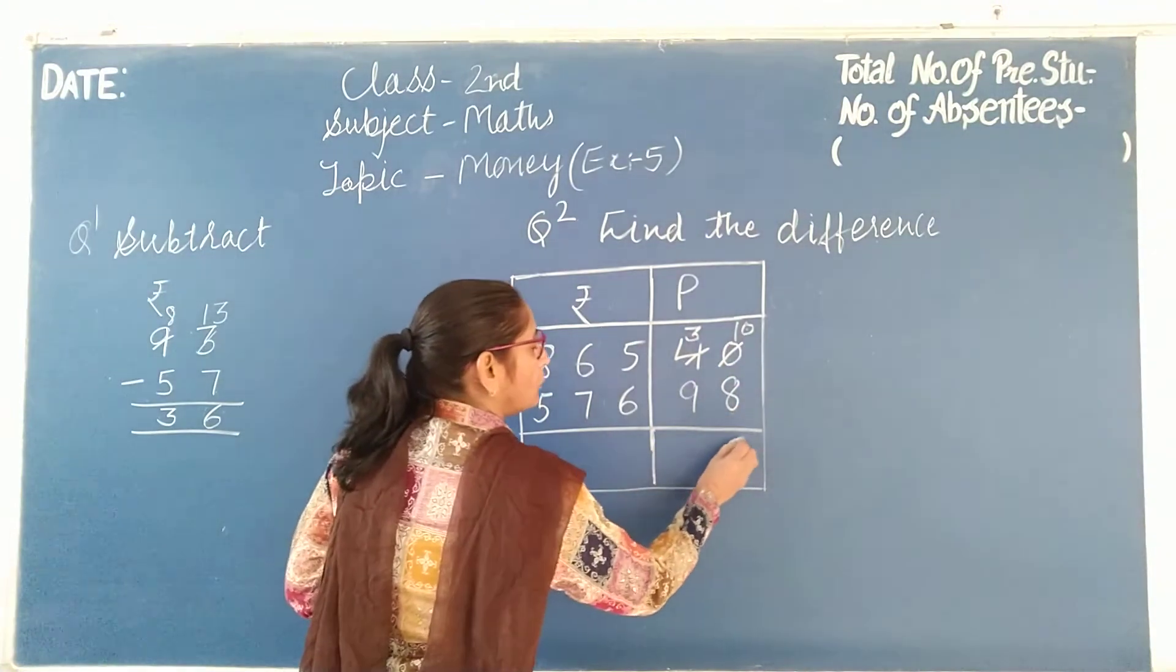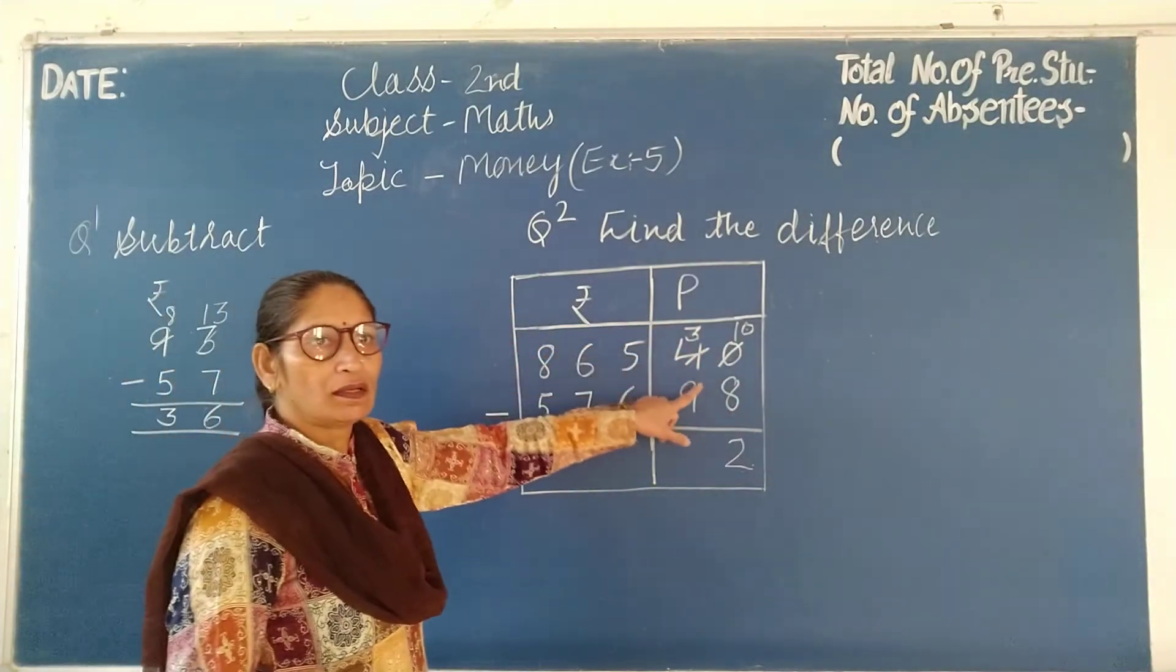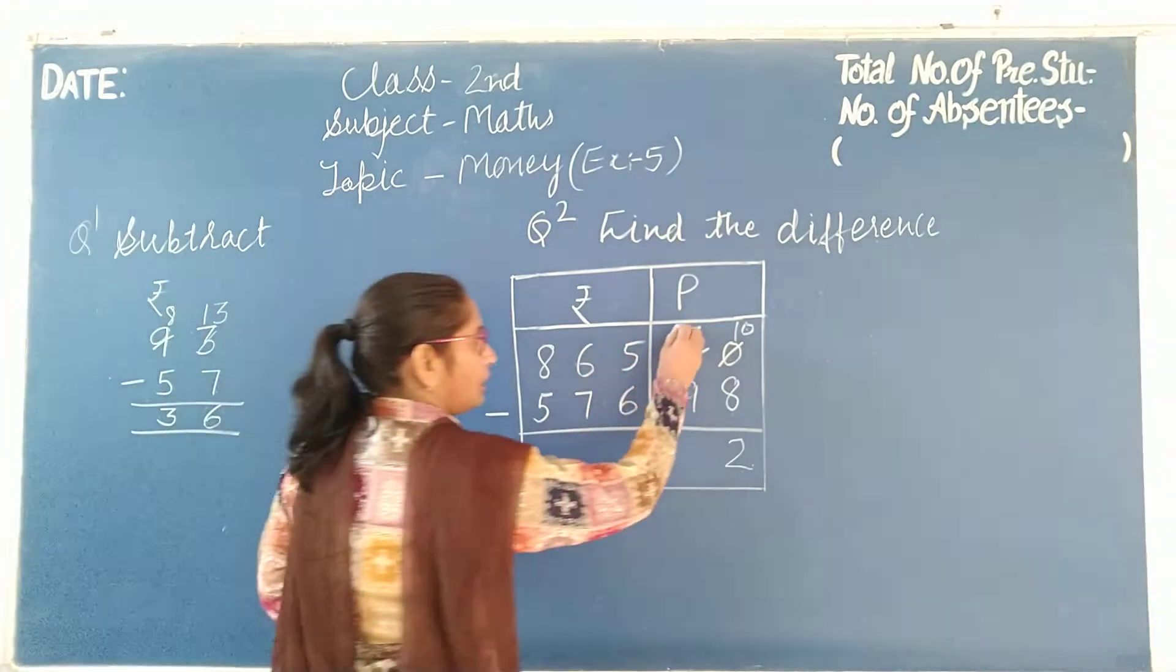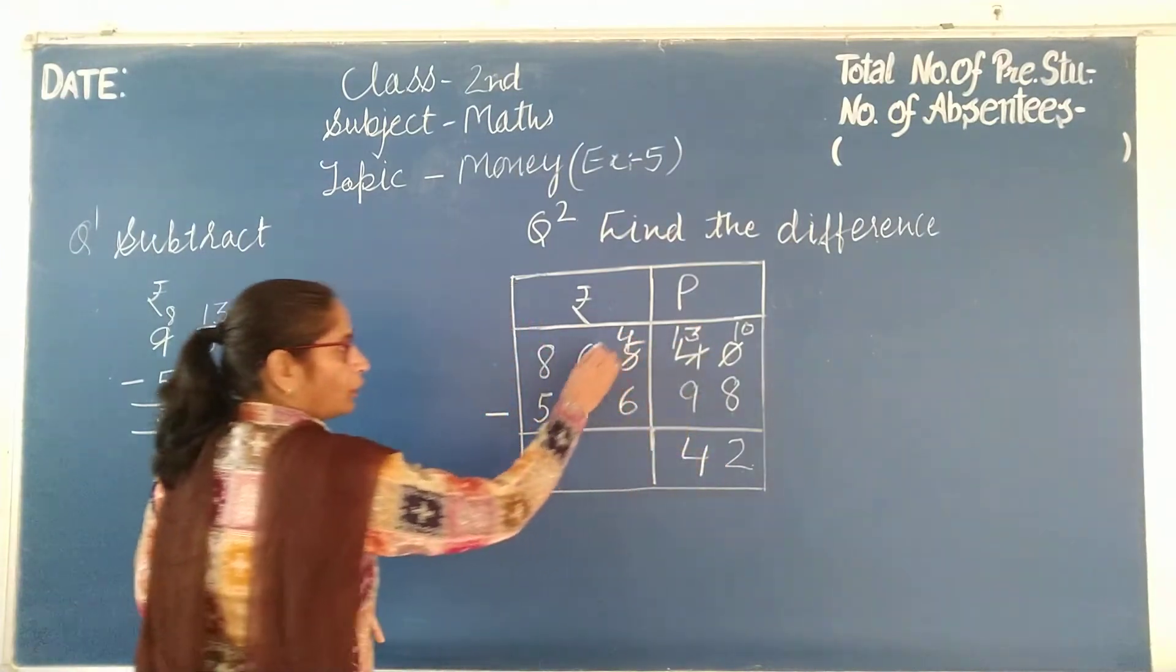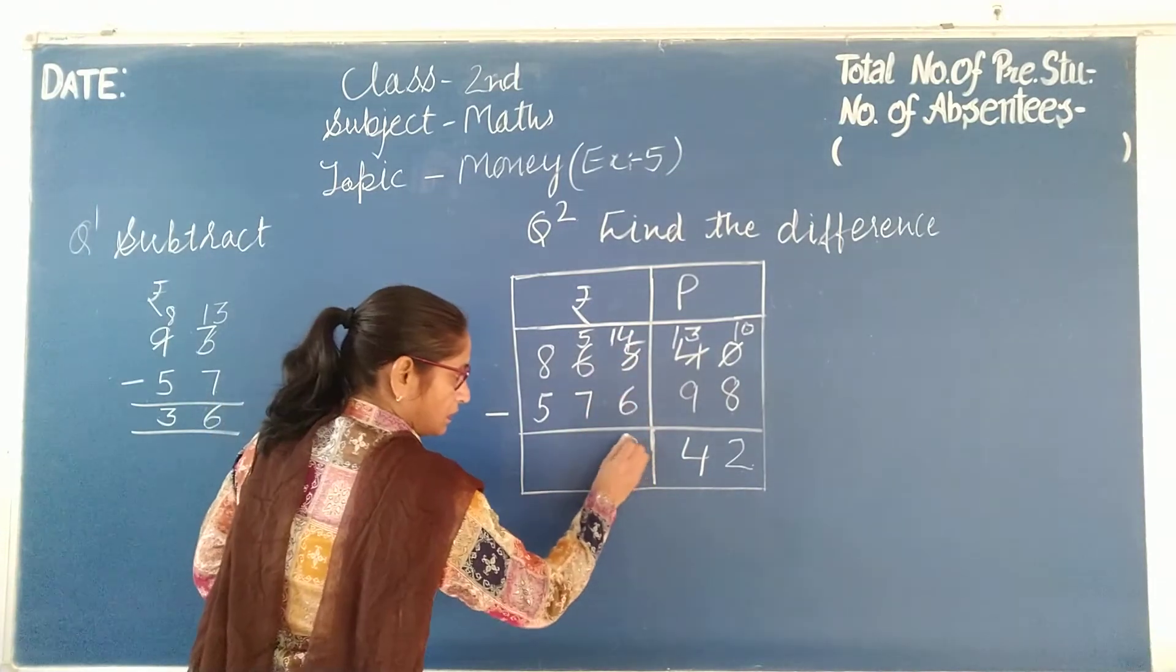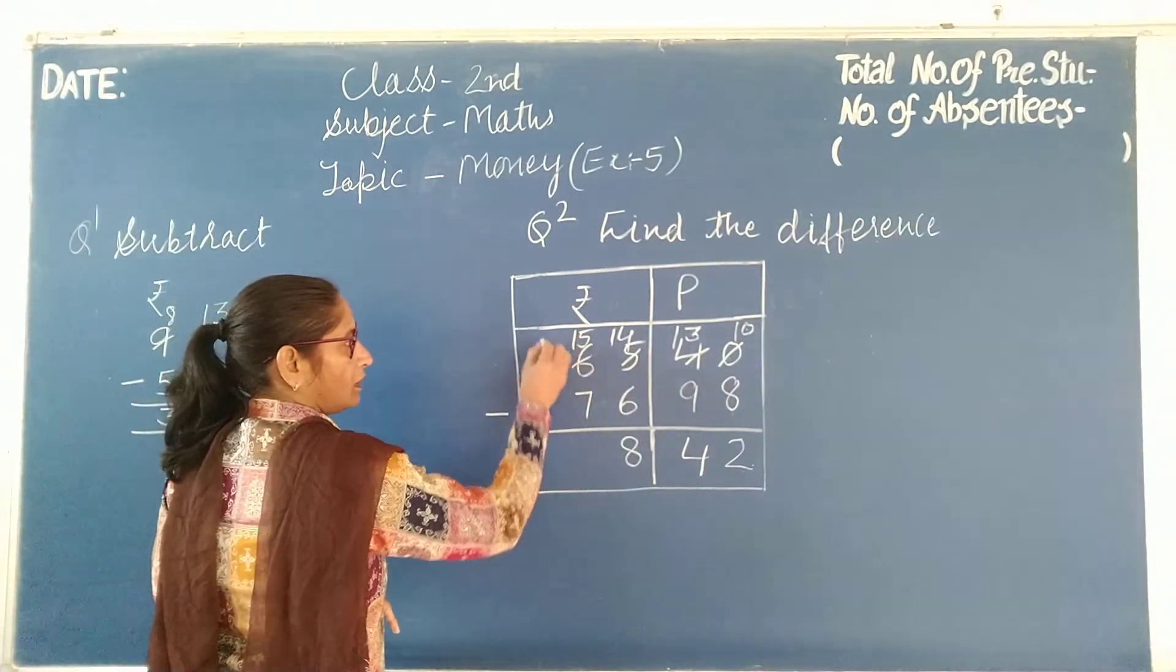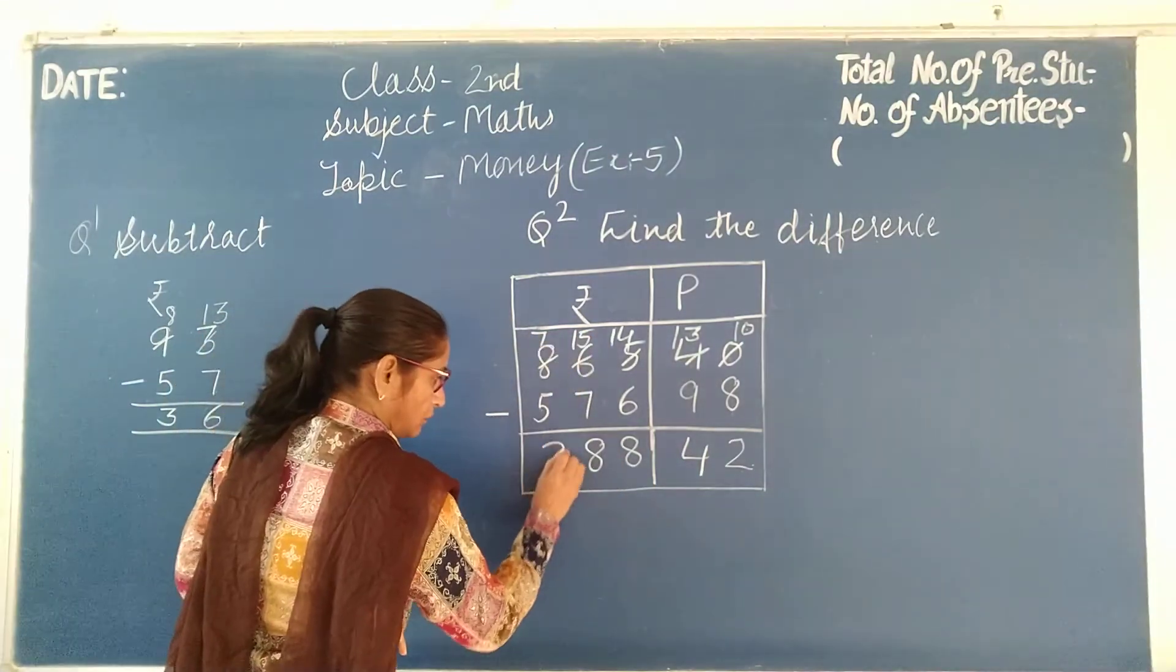10 minus 8 is 2. For 3 minus 9, we need to borrow. 15 minus 7 is 8, and 7 minus 5 is 2.